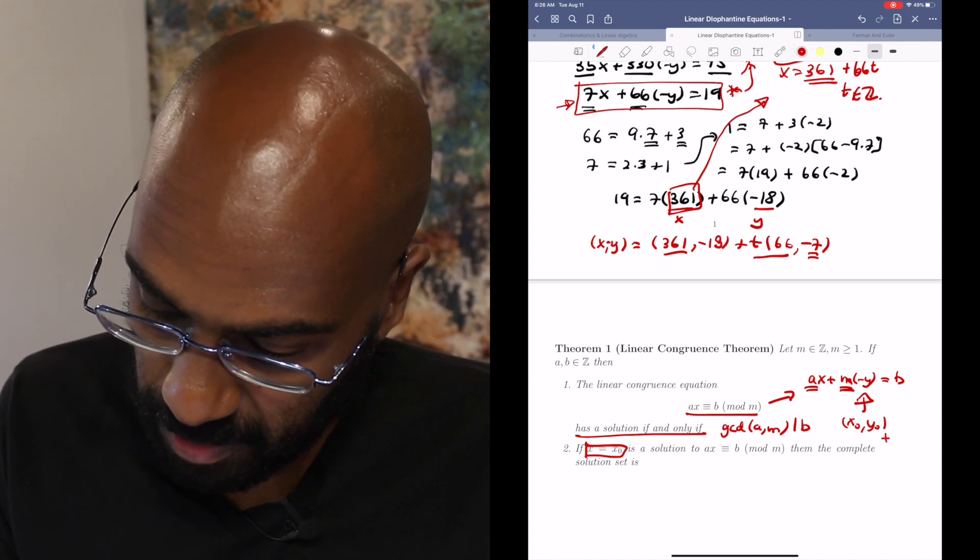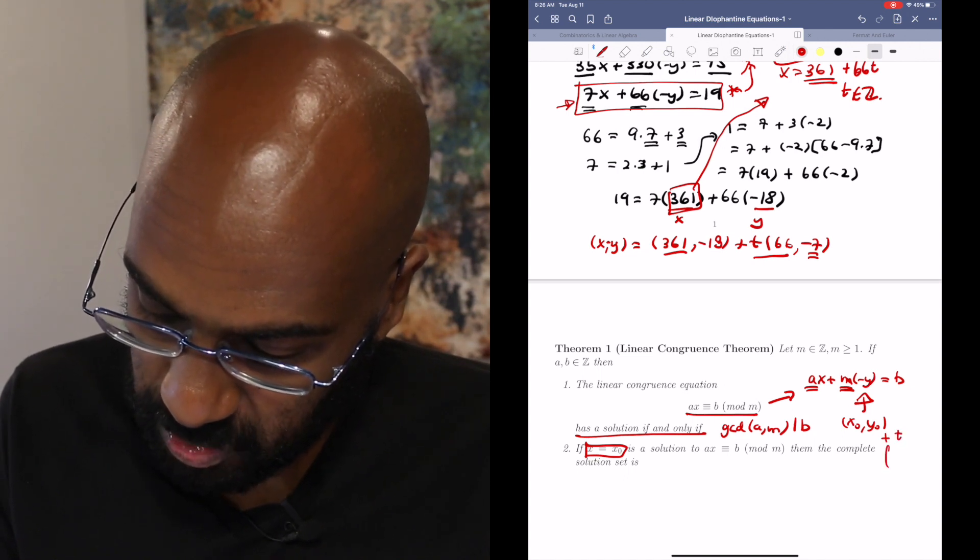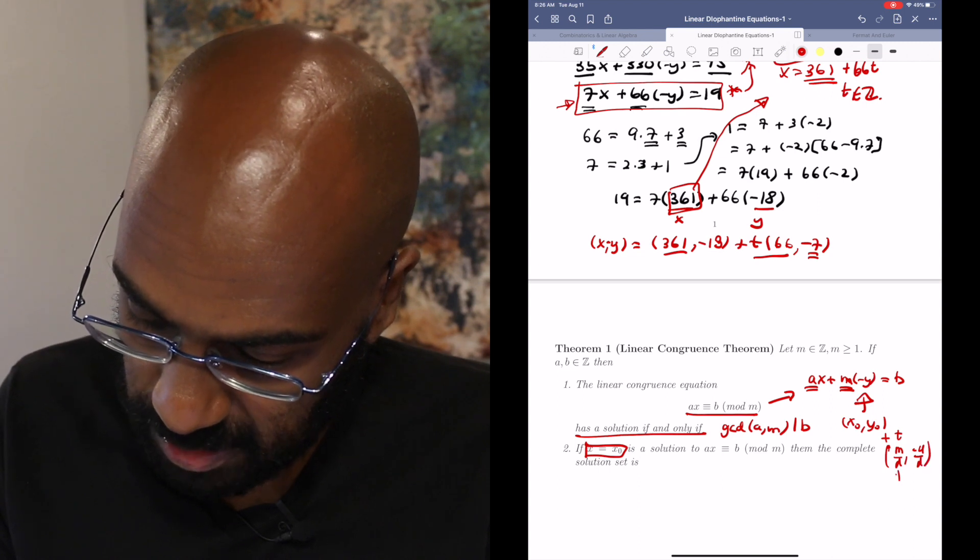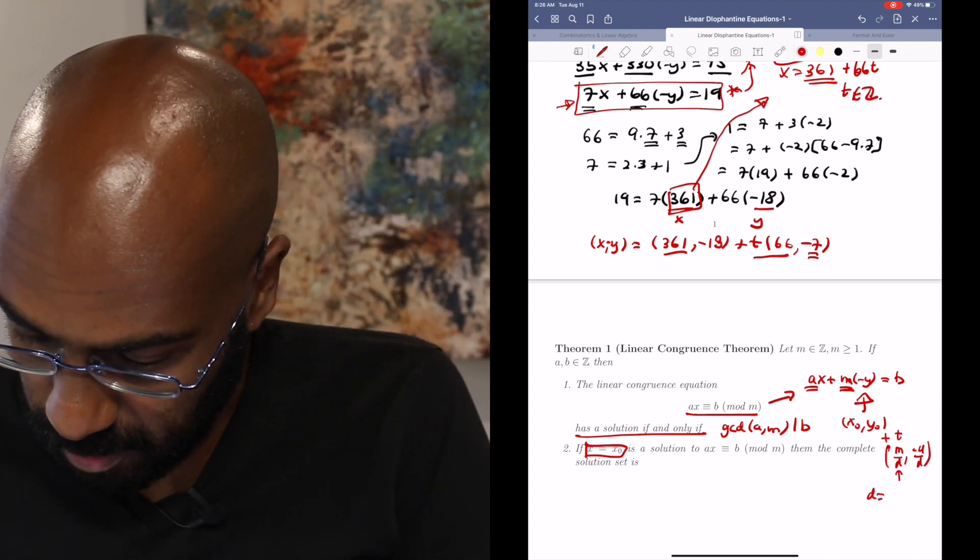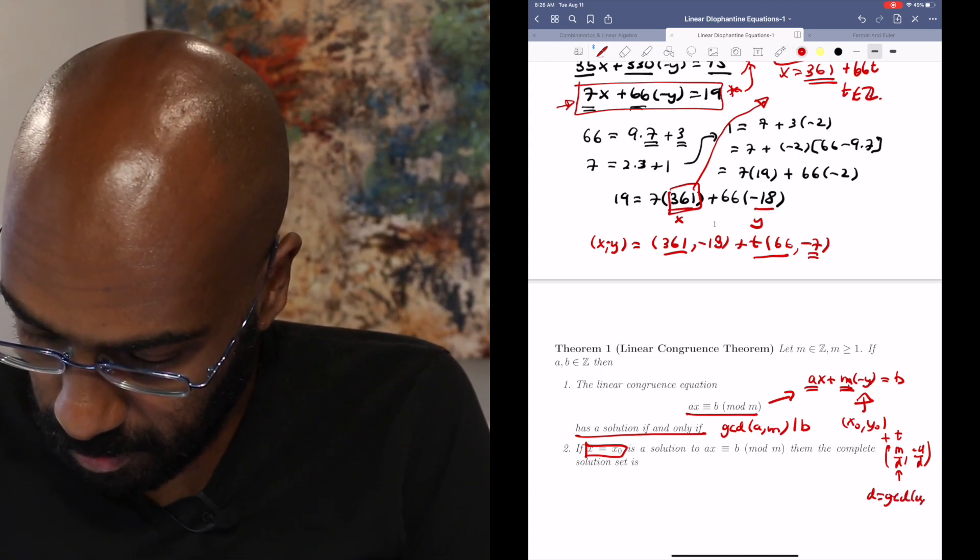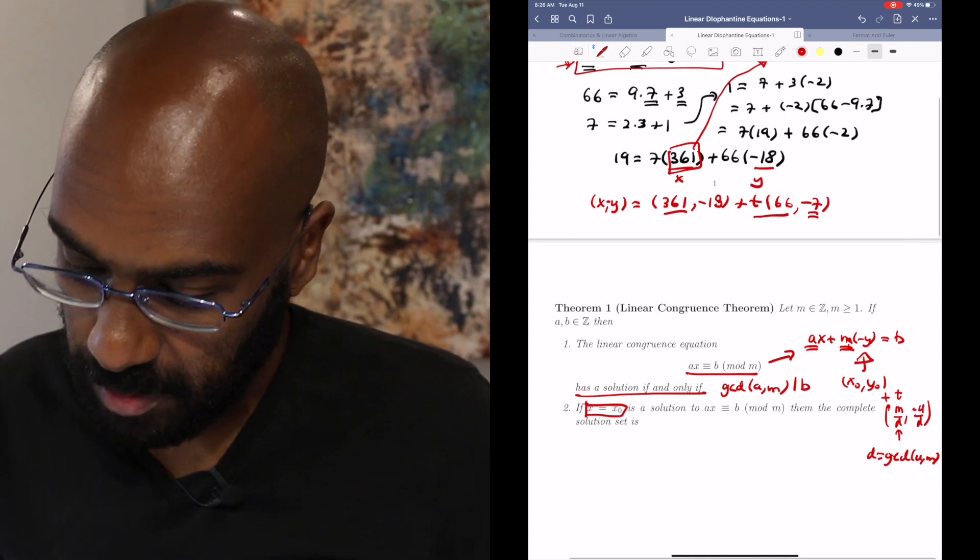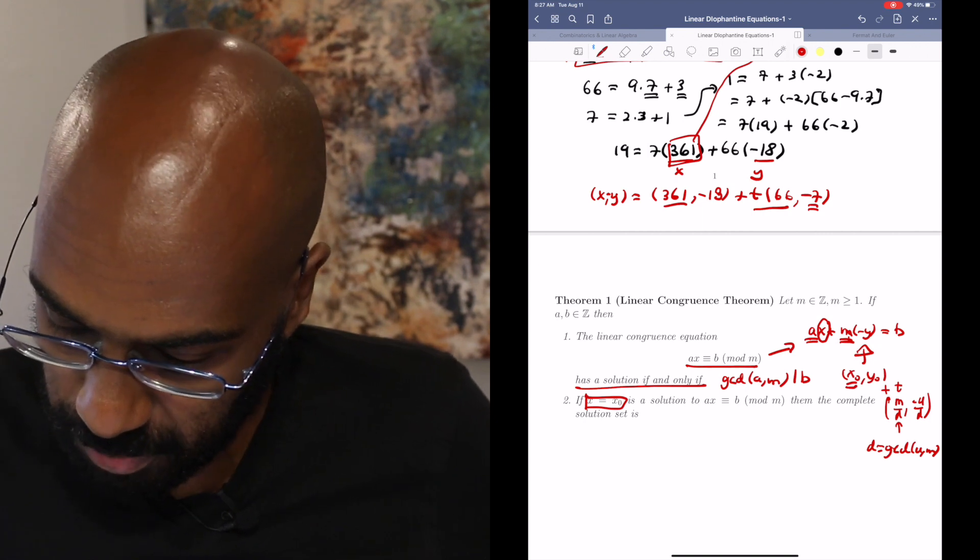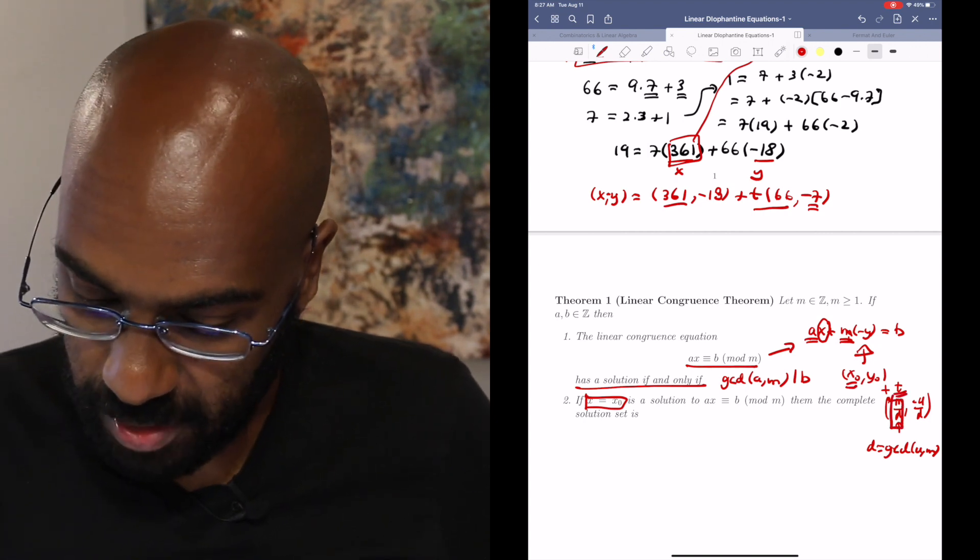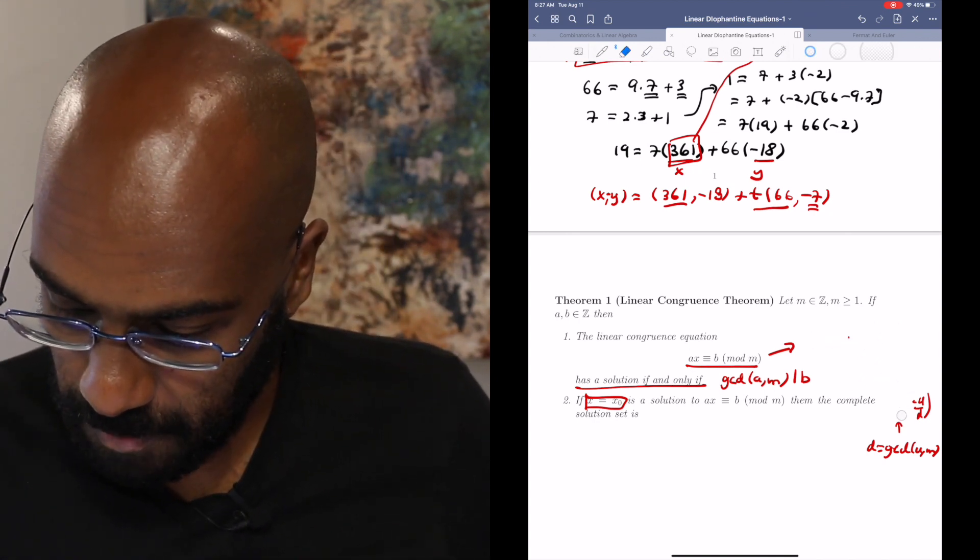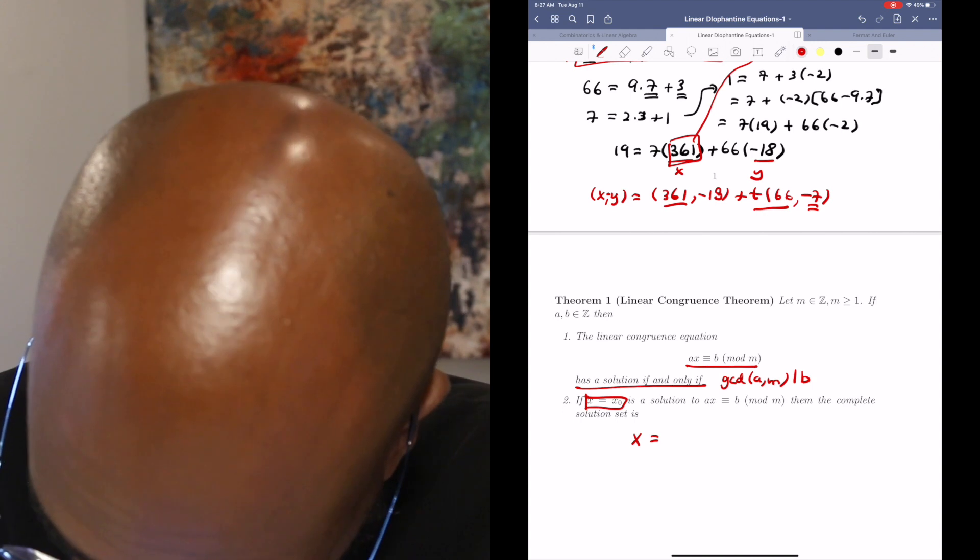plus constant multiples of m over d, negative a over d, where d was the GCD of these two factors a and m. So in particular, x is going to be this particular x0, plus constant multiples of this factor m over d, and so we can write this as x equals the set of things x0, plus t times m over d,